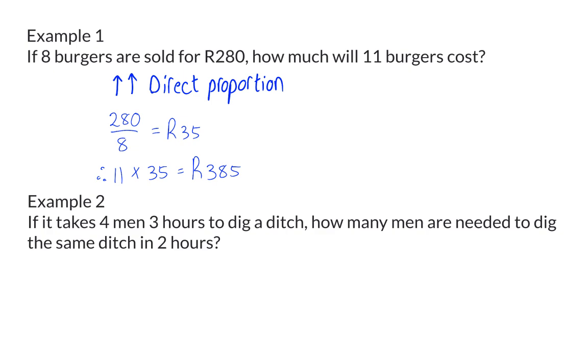Example 2. If it takes 4 men 3 hours to dig a ditch, how many men are needed to dig the same ditch in 2 hours? We want to decrease the number of hours from 3 hours to 2 hours. To decrease the number of hours, we will need more men, so we will have to increase the number of men. This means this is inverse proportion.